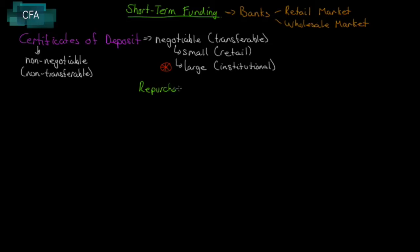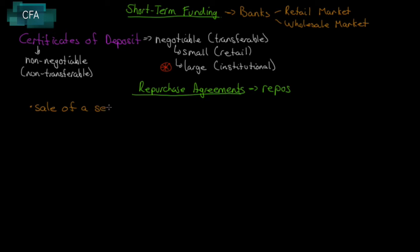Repurchase agreements, or repos, and reverse repurchase agreements are the major mechanism by which central banks perform their open market operations to target their overnight rate. When we deal with the macroeconomics part of the course, we'll talk specifically about monetary policy and how it's done using these repurchase agreements.